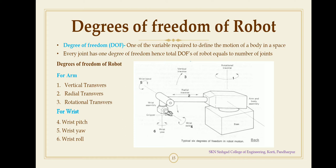The definition of degrees of freedom: it is one of the variables which is required to define the motion of a body in a space. So these are the six degrees of freedom used in robotics or used in industrial robots.